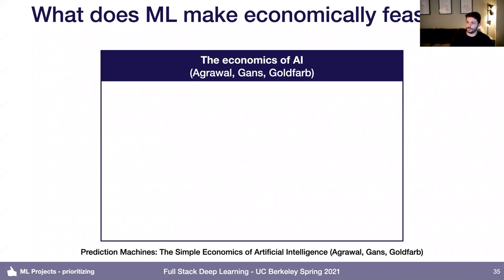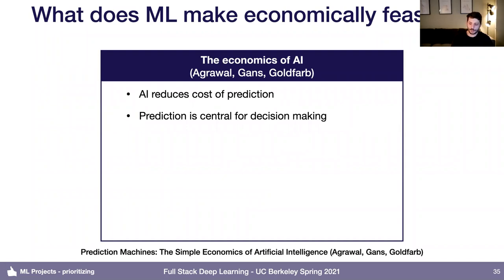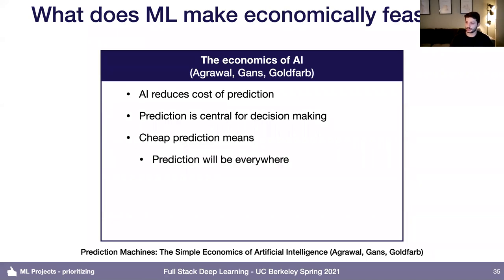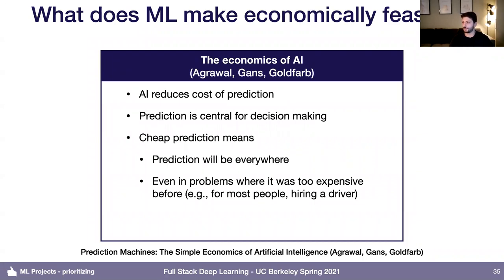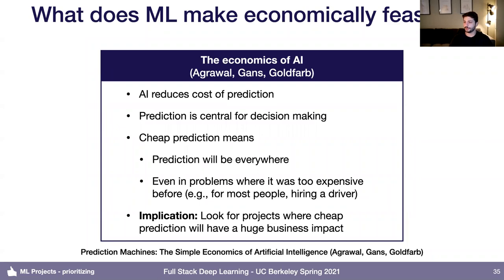One lens is economics. The book Prediction Machines lays out the case that at a high level, what AI enables is it reduces the cost of prediction. Where a certain type of prediction might have required an expert to spend time, machine learning allows you to automate that expert into a system you can run very cheaply. Prediction is essential for decision-making, and if you have really cheap prediction, it will appear in a lot more places, even for problems where it was previously too expensive. The implication for project selection is to look for projects where cheap prediction could have a huge business impact.